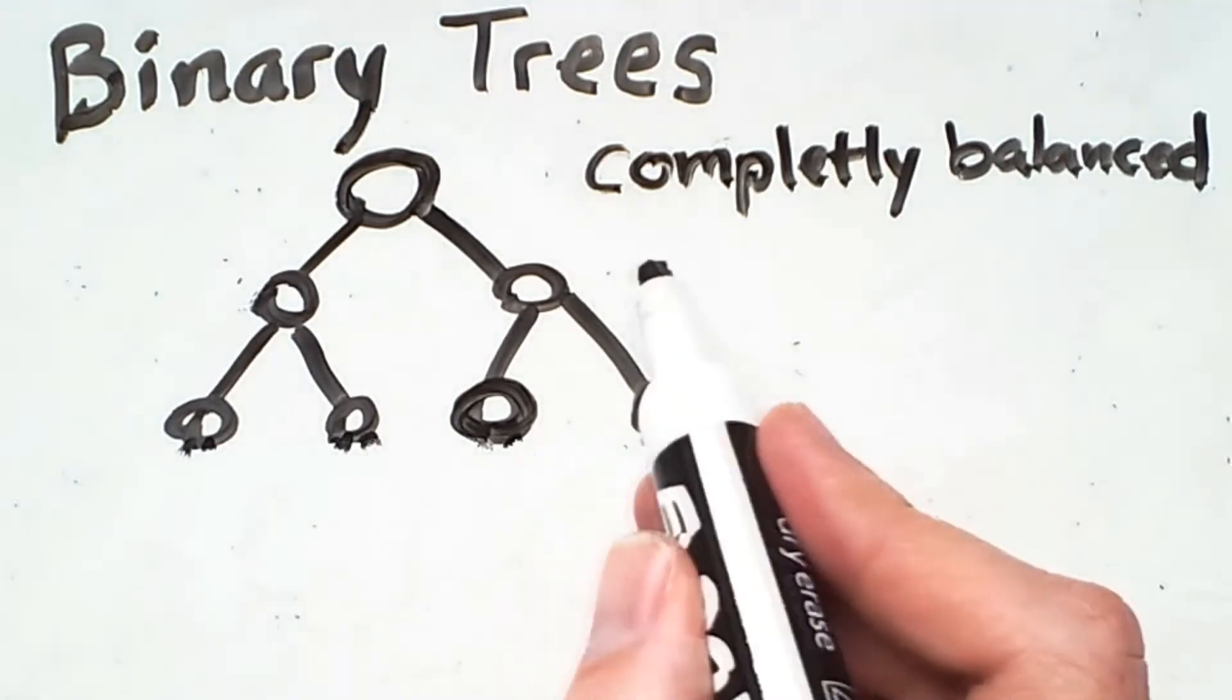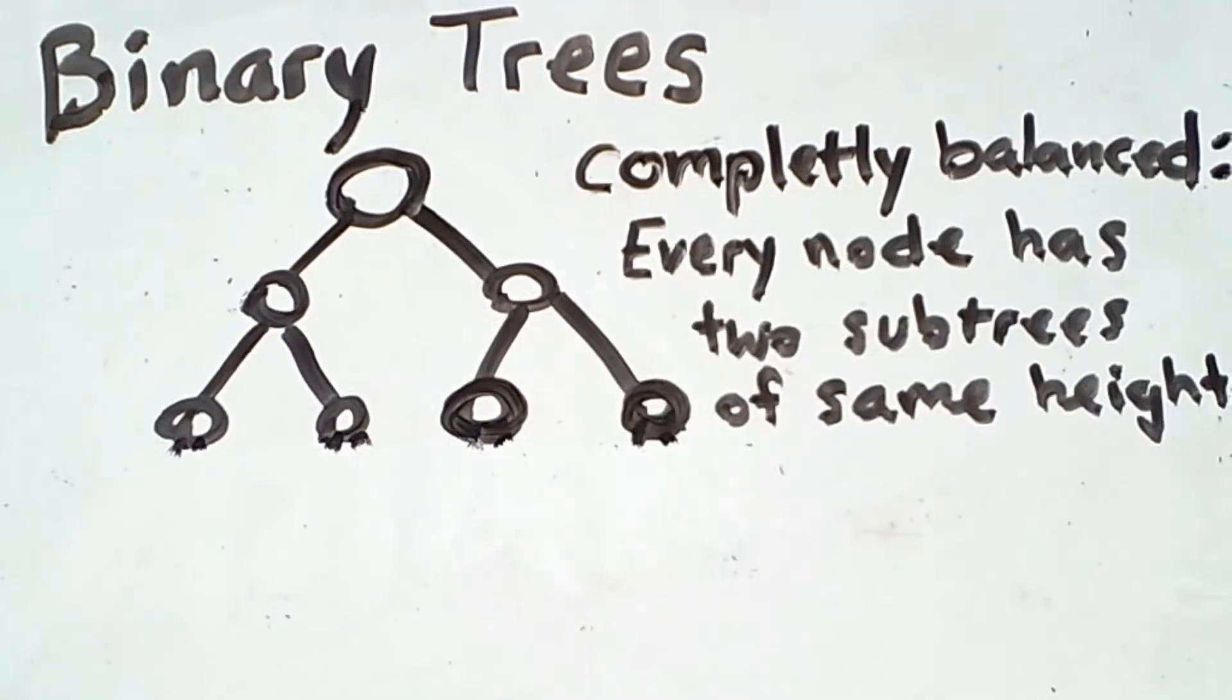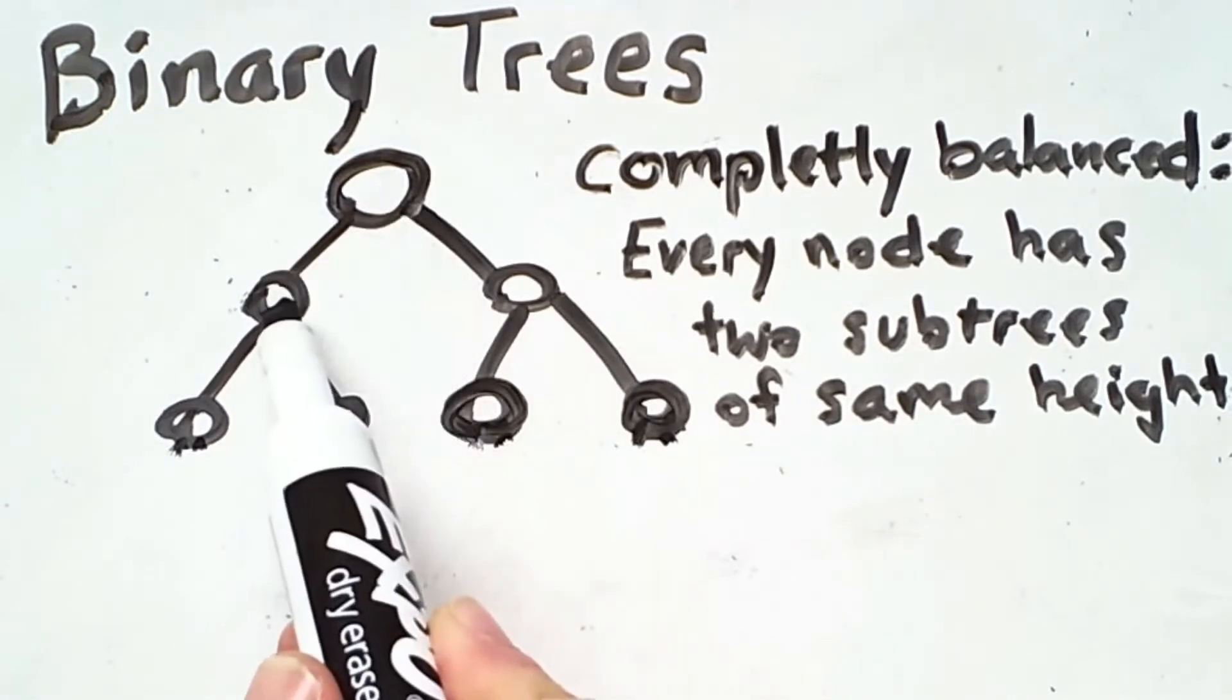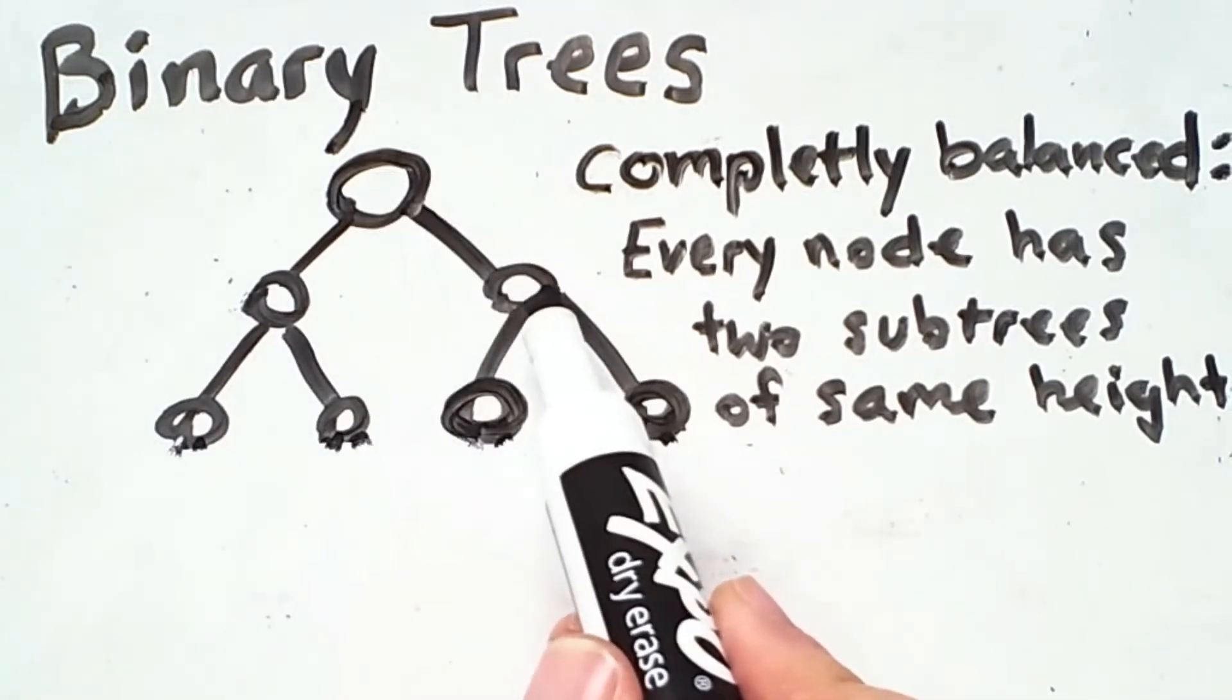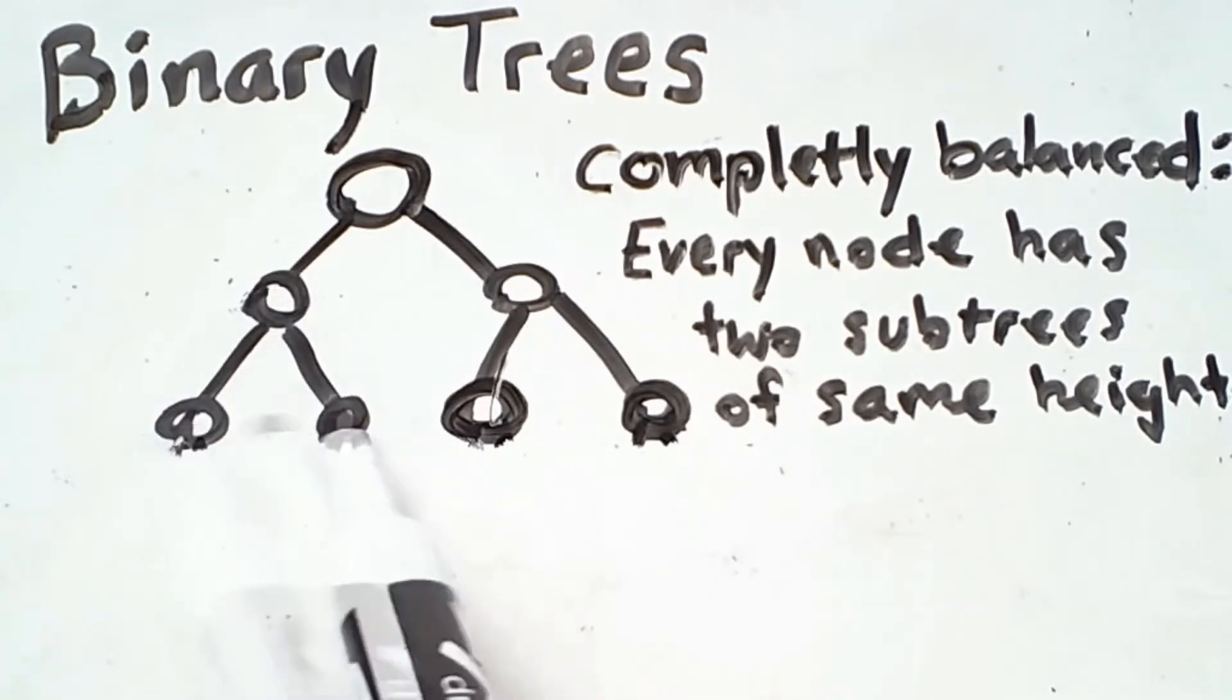We say that a tree is completely balanced if every node has two subtrees of the same height. So this tree here is completely balanced because this root node has a subtree here with a height of 2, and this right subtree has a height of 2. This node has two subtrees with a height of 1, as does this one, and even the leaf nodes can be thought of as having empty subtrees with heights of 0. So every single node has two subtrees with the same height.